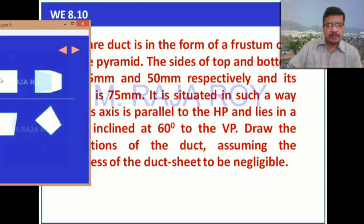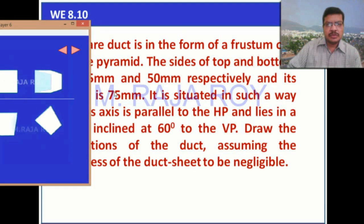When the axis makes 60 degrees with the VP, the front view will look like this. We start drawing with the front view in the first stage where you can see the true shape of the base. The bottom base side is 75, the top base side is 50, and the axis length is 75. This is the simple position. In the second stage, represent the axis inclination and project the final front view.